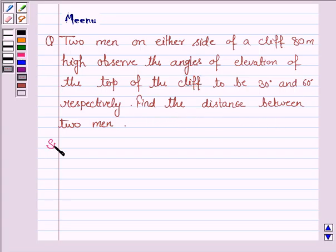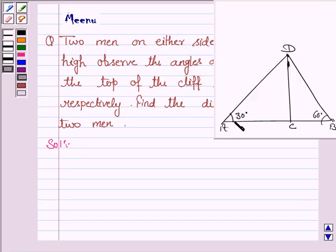Let's now move on to the solution. We are given that two men on either side of a cliff 80 meter high observe that angle of elevation is 30 degrees and 60 degrees respectively.